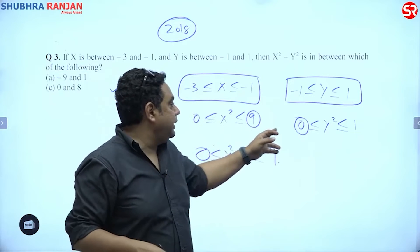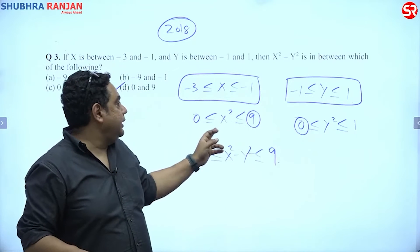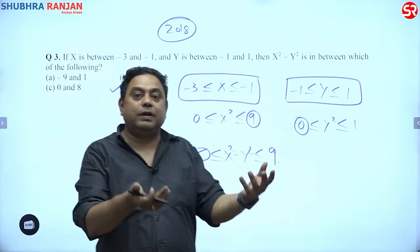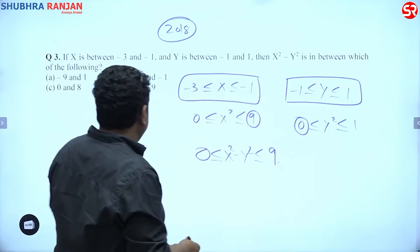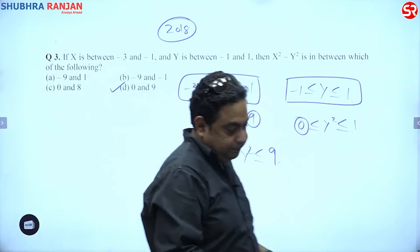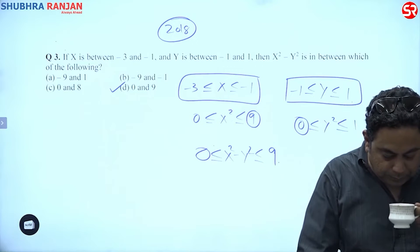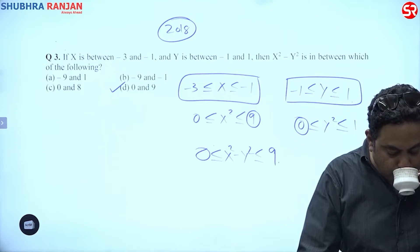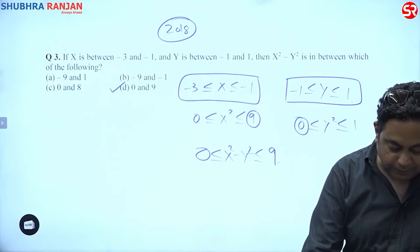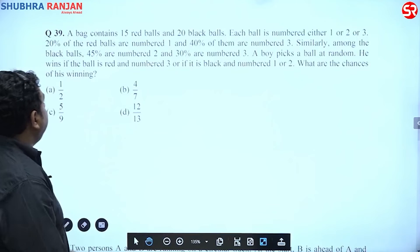If you take x square to be 9 and y square to be 0, so 9 minus 0 is the maximum value. All right, so it lies between 0 to 9. Kindly write it. Next, he says there